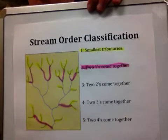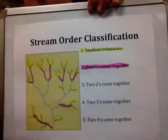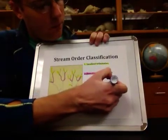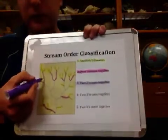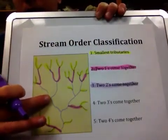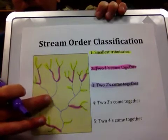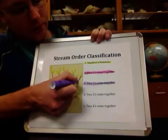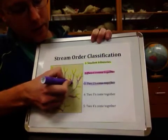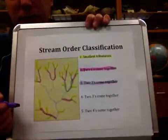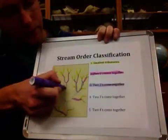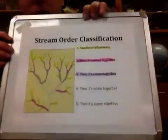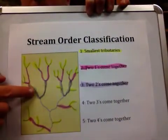Now we are looking at third order streams. Third order streams are where two second order streams come together. I'm going to highlight these in purple. Everywhere that two of our pink highlighted streams come together, we have a third order stream, and we highlight that all the way until it has an intersection with another major branch. Where our second order streams came together, we have third order streams.